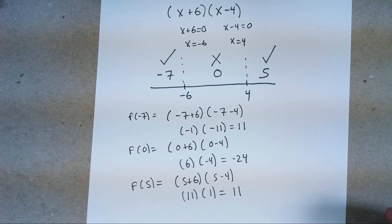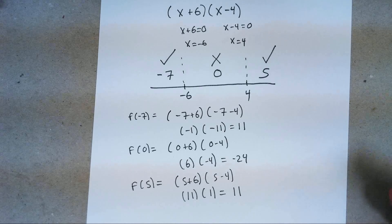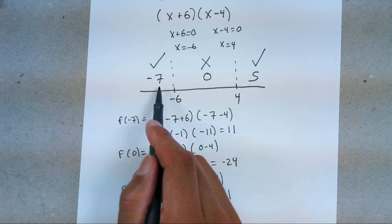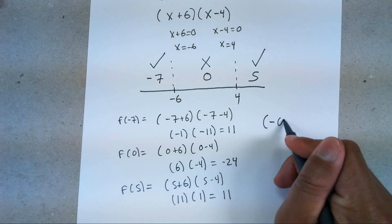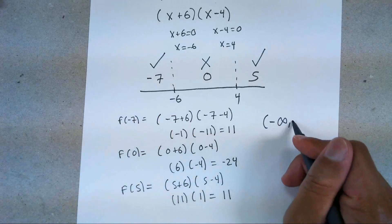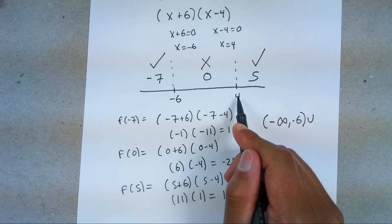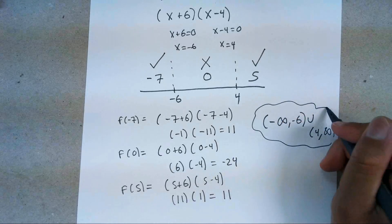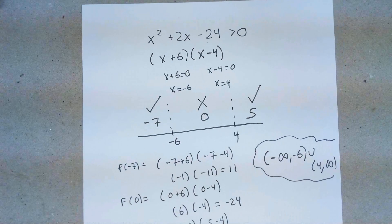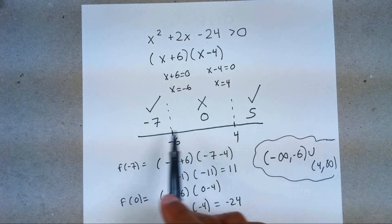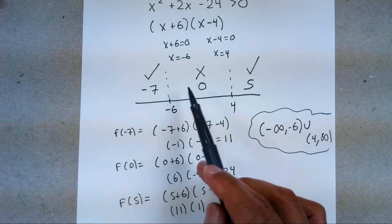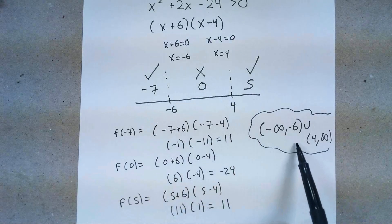So now we know the boundaries of when our graph is going to be greater than zero. We express the answer in interval notation: since all numbers left of −6 work out, it goes all the way from negative infinity up to −6, union 4 to infinity. To summarize: factor out, find x-intercepts, graph them on a number line, pick boundaries, pick test numbers, plug them into your factored equation, check if they give a value greater than zero — check mark if yes, x if no — then express the winning intervals in interval notation.